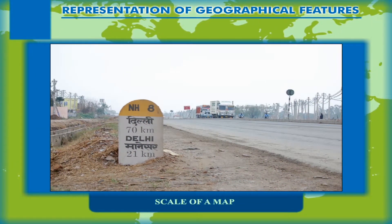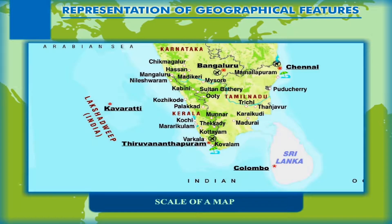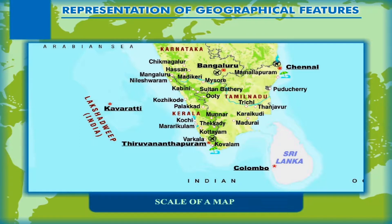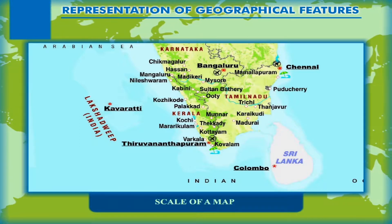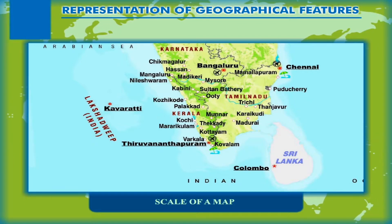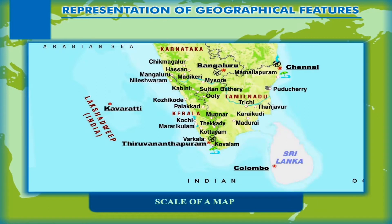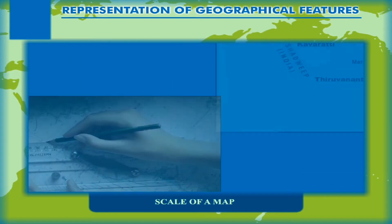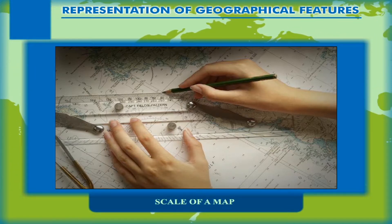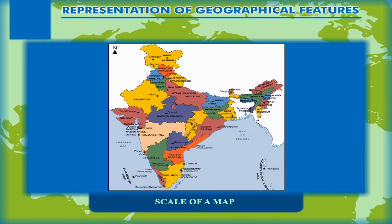The distance on the ground is usually measured in large units such as kilometers or miles, while the units of measurement on the map are centimeters and inches. The scale of a map shows how many smaller units such as centimeters or inches on the map represent how many kilometers or miles on the ground. For example, if the scale reads one centimeter is equal to one kilometer, it means that one centimeter measured on the map is equal to one kilometer on the ground.